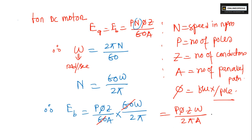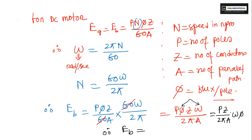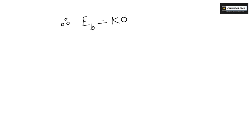For a particular machine, the number of poles P, number of conductors Z, and parallel paths A remain constant. The only variable quantities are phi and omega — that is, flux and speed. So we can write Eb equals K·phi·omega, where K equals P·Z divided by 2·pi·A is a machine constant.